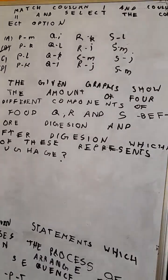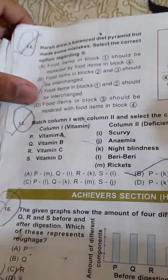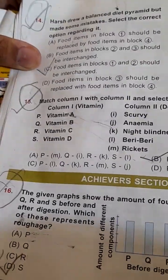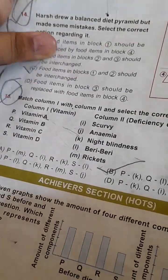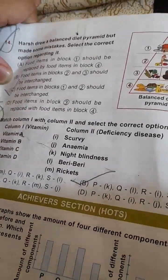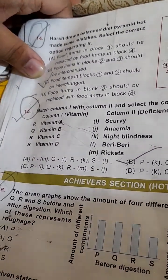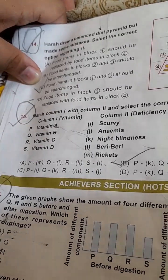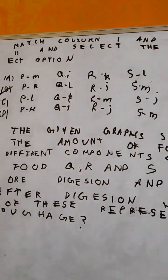Match Column 1 and Column 2 and select the correct option. If we eat foods rich in vitamin A, we won't suffer night blindness, so P is K. If we eat vitamin B, we will not suffer from beriberi, so Q is L. If we eat vitamin C, we will not suffer from scurvy, so R is J. If we eat vitamin D, we will not have anemia, so S is N. The correct option is option B: P is K, Q is L, R is J, S is N.